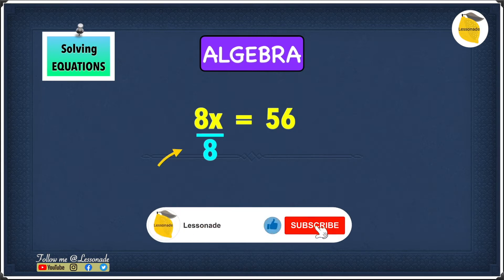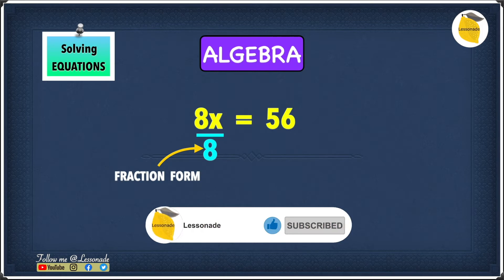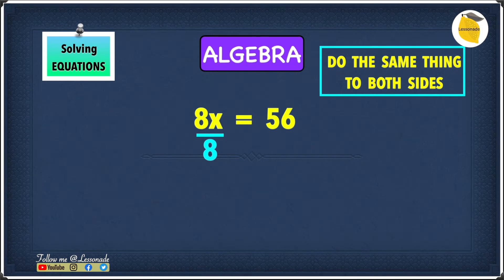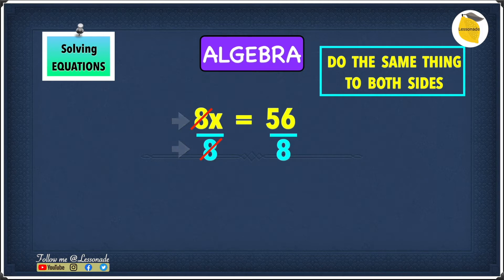As you can see, we're writing divided by 8 in fraction form — because in algebra, most of the time you write division in fraction form. We know we have to do the same thing to both sides, so because we're dividing one side by 8, we also have to divide the other side by 8. We have an 8 on the top and an 8 on the bottom, so we can cancel both of these 8s out, which means we're left with just x. And 56 divided by 8 is 7, so our answer is x equals 7.